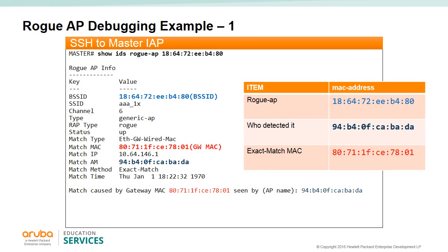You can issue commands from the CLI interface. The command 'show ids rogue ap <MAC address>' displays information about how a rogue AP was classified and why. In this example, the rogue has an ending part of the MAC address of B480. The IPS that discovered the rogue is BADA, and the reason for the classification was an exact match on the default gateway 7801.